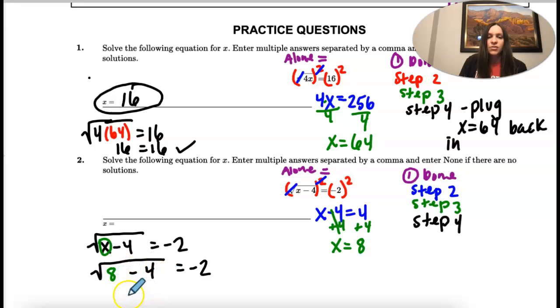So eight minus four is four. And what happens here is the square root of four is positive two. So it ends up that these are not equal.